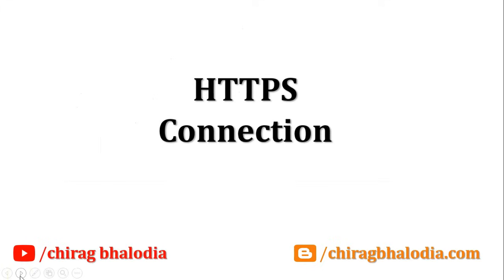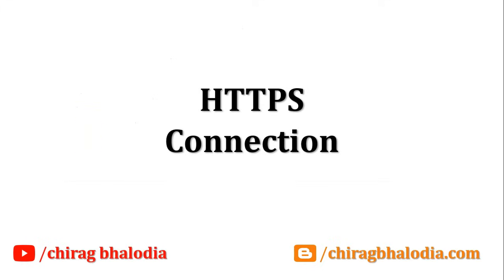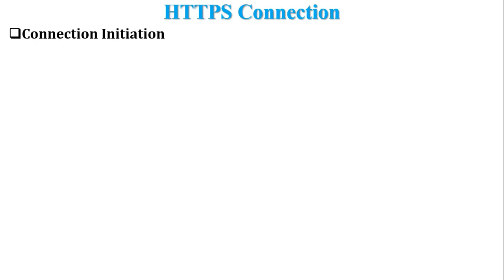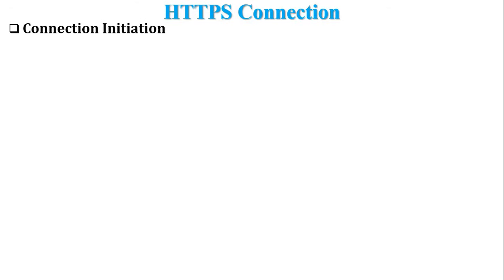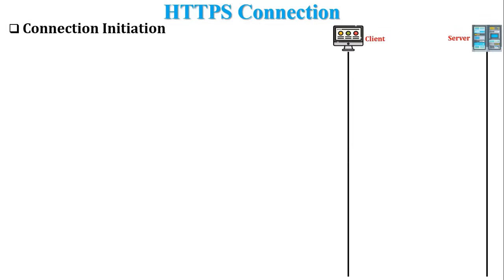The next topic is HTTPS connection, which is executed in three phases: connection initiation, data transfer, and connection closure. In the connection initiation phase, a client wants to communicate with a server that supports HTTPS. HTTPS uses the TLS handshake to initiate a connection. The client sends a hello request to the server.